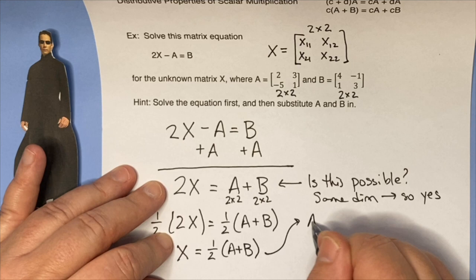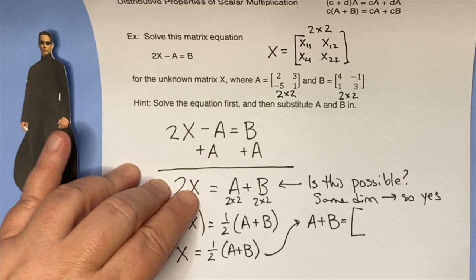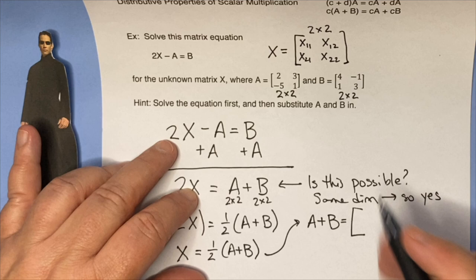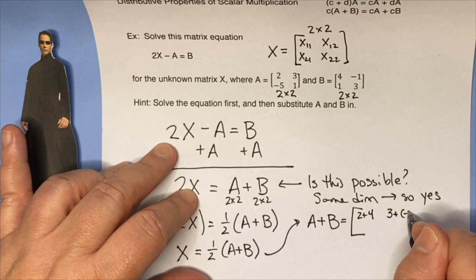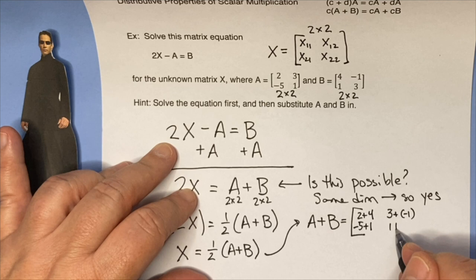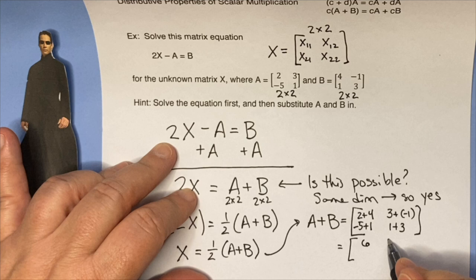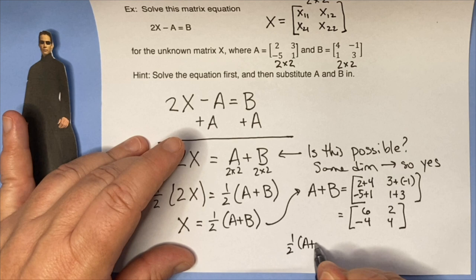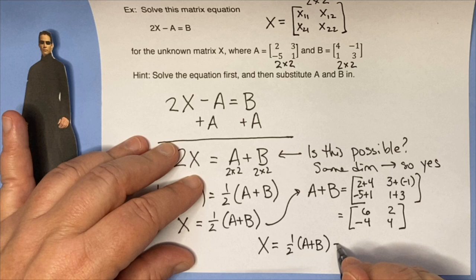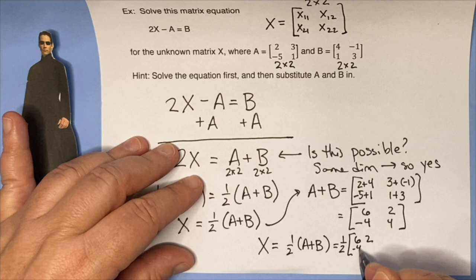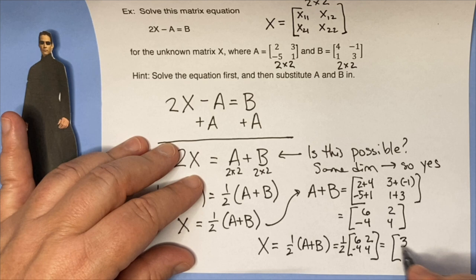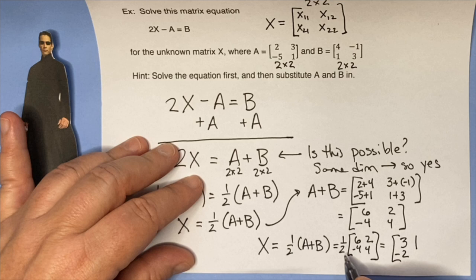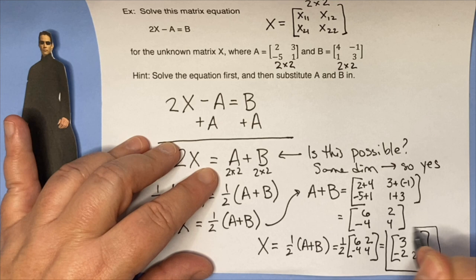To solve this, I'm going to find A + B. I've got [2, 3; -5, 1] and [4, -1; 1, 3]. So I've got 2 + 4, 3 + (-1), -5 + 1, and 1 + 3. That's going to be [6, 2; -4, 4]. Then one half of A + B, which is our unknown matrix, is one half of [6, 2; -4, 4]. One half times 6 is 3, one half of 2 is 1, one half of -4 is -2, and one half of 4 is 2. And that's my answer.